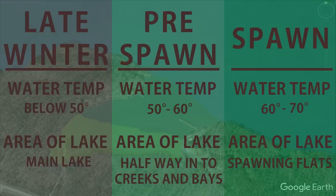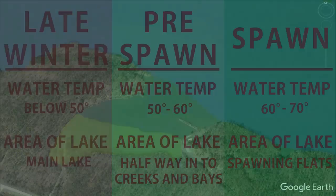Pre-spawn is a time period when water temperatures are between 50 and 60 degrees and the bass are moving from their late winter areas to their spawning areas. There are exceptions to this water temperature guideline and the exact timing of the pre-spawn period can vary depending on the part of the country you're in and the species of bass you're targeting.